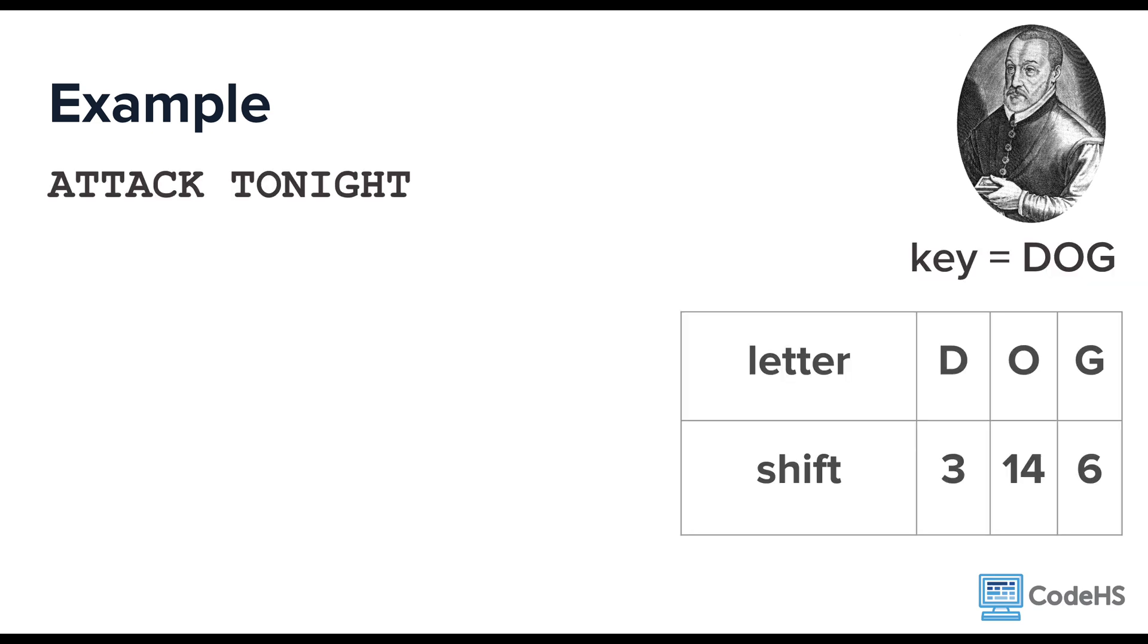Let's look at an example. The first letter is shifted 3 times to the letter D. The second letter is then shifted 14 times to the letter H. The next letter is shifted 6 times to the letter Z. Now here you may notice that the plain text letter T is encrypted to two different letters using this method. Well that will definitely help hide the message.